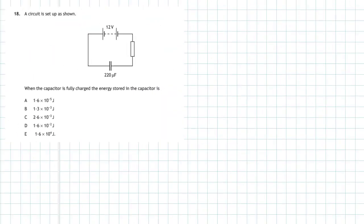Question 18 from section 1 of the 2018 Higher Physics examination. We have a circuit set up as shown. The components include a battery of 12 volts connected in series with a resistor, then connected to a capacitor which has a value of 220 microfarads.